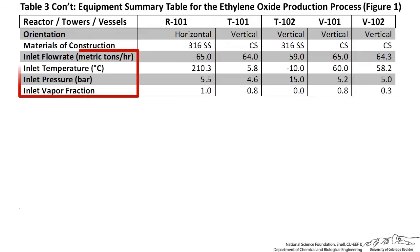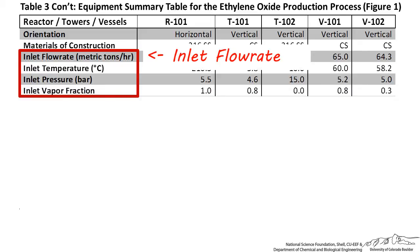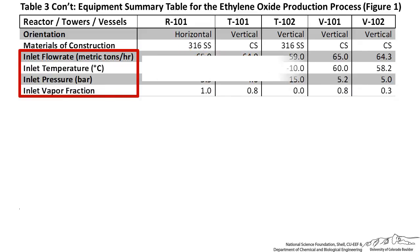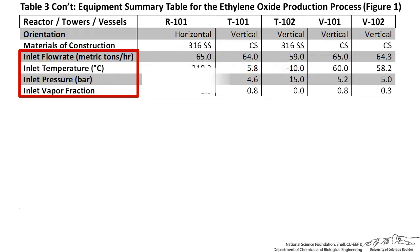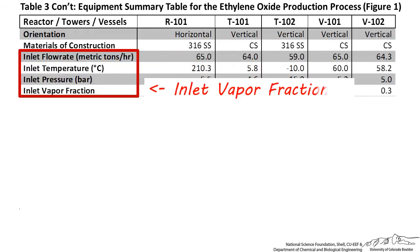The next set of information is important for verifying the conditions under which each of these units are running. For each piece of equipment, be sure to include the inlet flow rate, temperature, pressure, and vapor fraction. If you're using process simulation software, this information can be copied and pasted from the stream table.